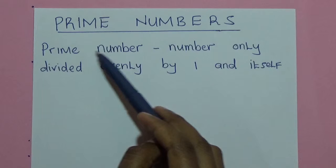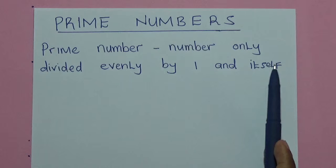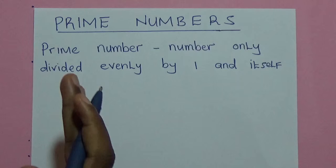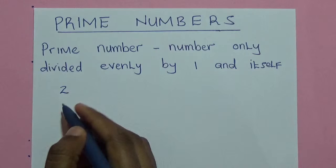Let us look at prime numbers. A prime number is a number only divided evenly by one and itself. We look at some examples, from 2 up to 10.